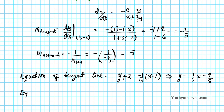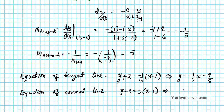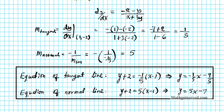For the normal line, remember it is perpendicular to the tangent, which is why we take the negative reciprocal of the tangent slope. The equation of the normal line is: y plus 2 equals 5 times (x minus 1). In slope-intercept form, distributing gives y equals 5x minus 5 minus 2, so y equals 5x minus 7. Those are our two equations — the tangent and normal lines.